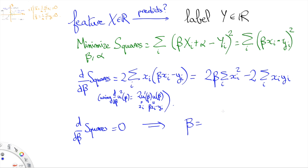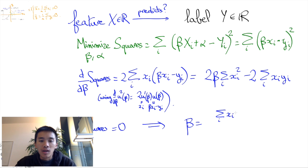Since this needs to be 0 when we minimize the sum of squares, we obtain the equation on beta: beta equals sum of the x_i y_i divided by the sum of the x_i squared.